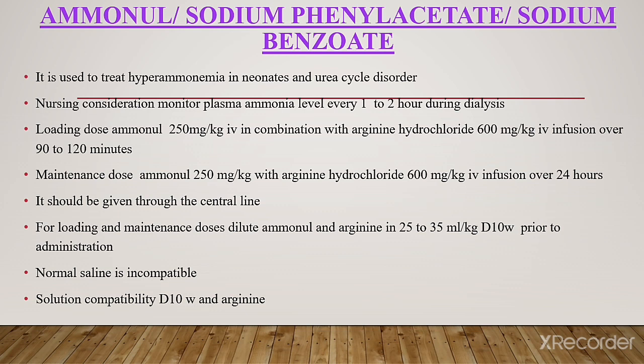It should be given through the central line. For loading and maintenance doses, dilute aminol and arginine in 25–35 ml per kg dextrose in water prior to administration. Normal saline is incompatible with arginine and aminol. Solution compatibility: dextrose in water and arginine.